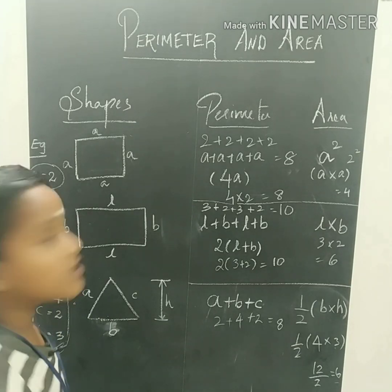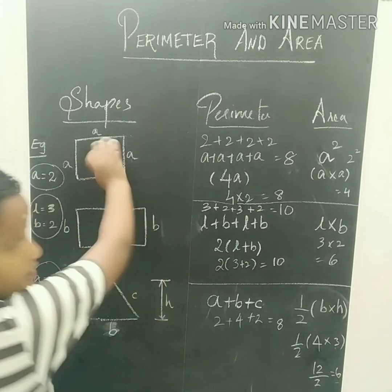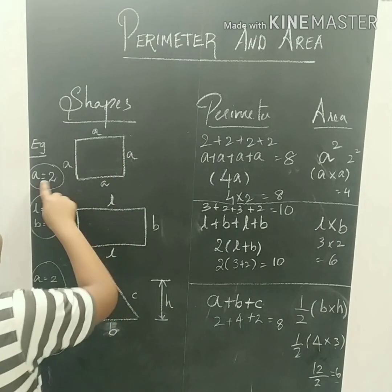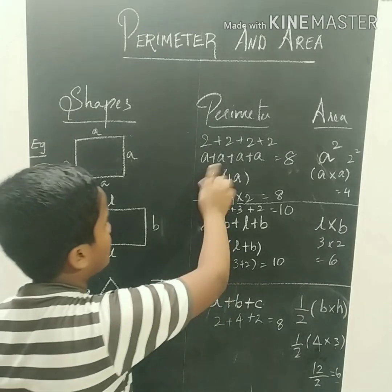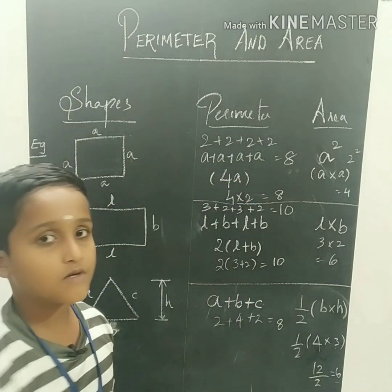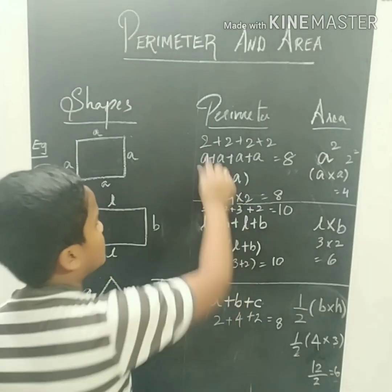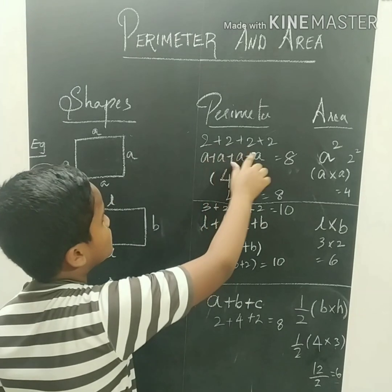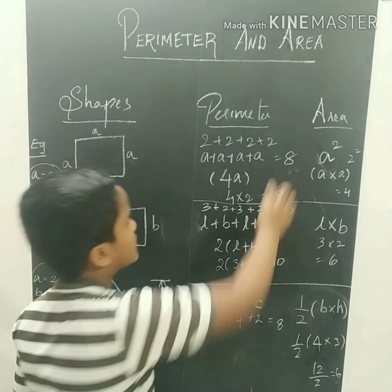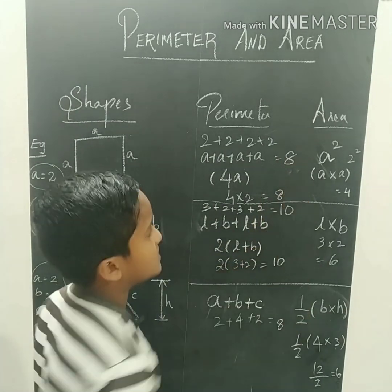Let's look at a square example. A is equal to 2. The perimeter is 4A, which is 2 plus 2 plus 2 plus 2, equal to 8.